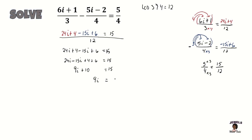So now we're going to move that 10 to the right-hand side of our equation. Because it's added here, we're going to subtract it on the other side. So we have 9i, and 15 minus 10 equals 5. We're now going to divide both sides of the equation by 9. The 9s on the left-hand side cancel, and i equals 5 ninths.